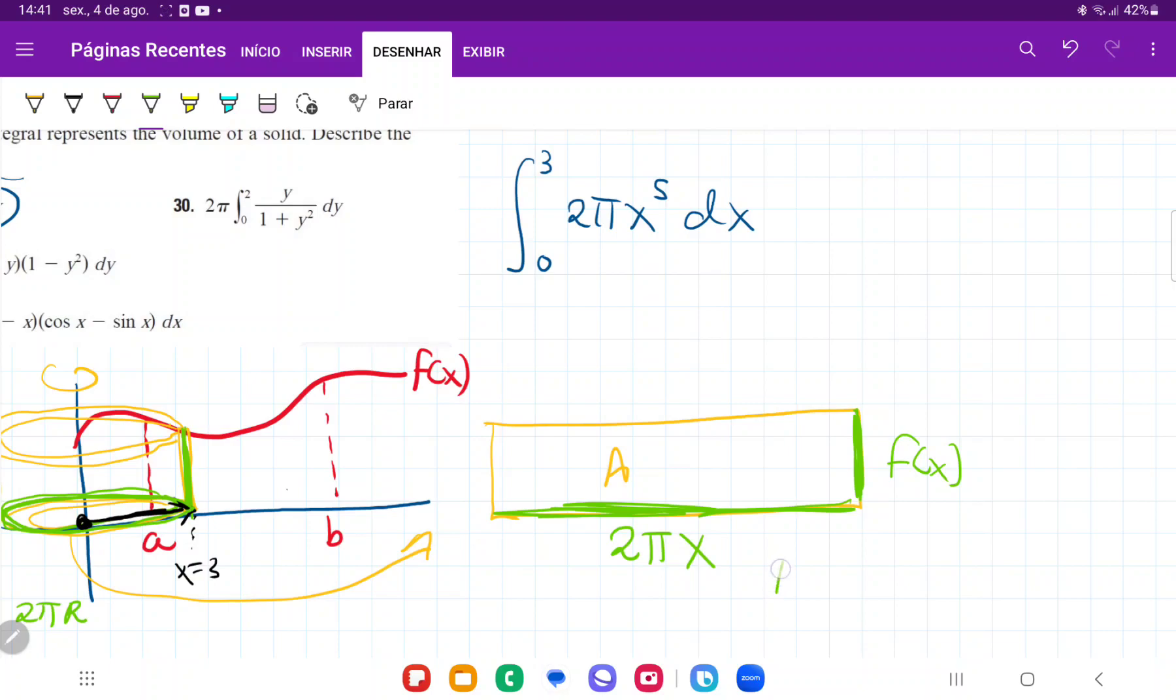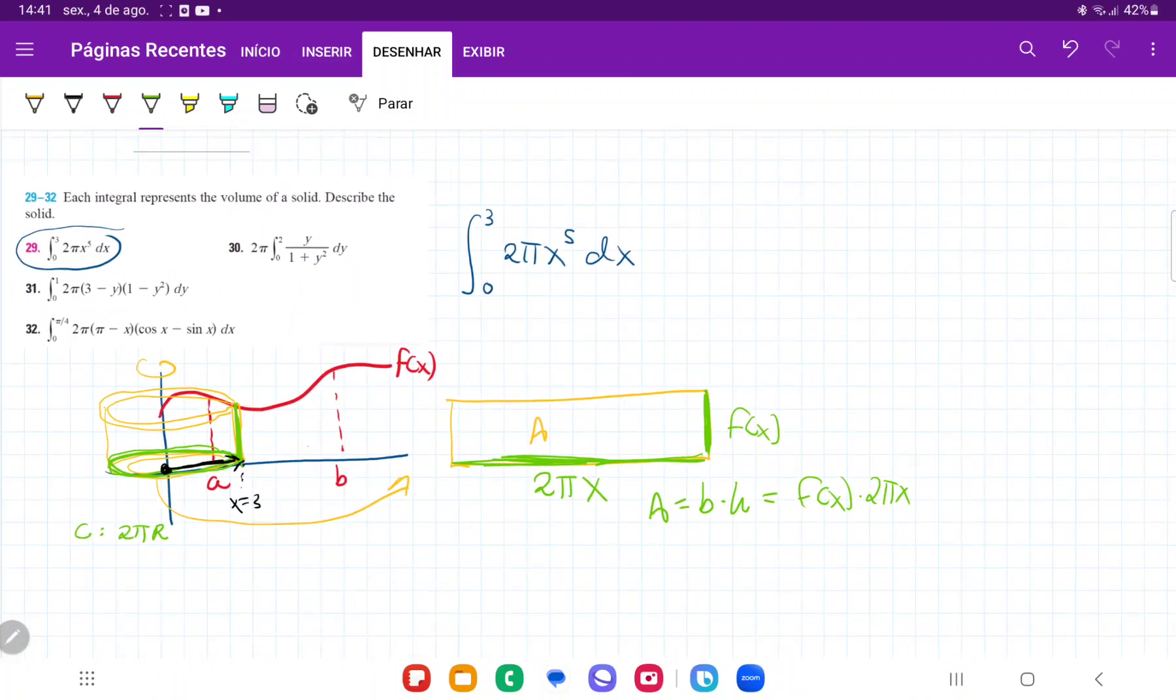And so the area is base times height, so f of x times 2πx. And so the integral of this volume here, this generic one, so this volume would be given by the integral from a to b. We're summing up the area of all these cylinders of f of x times 2πx dx.